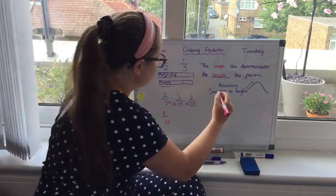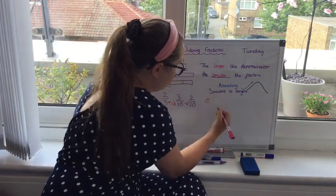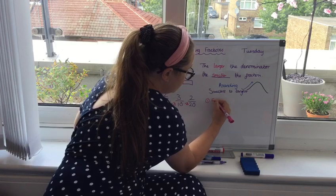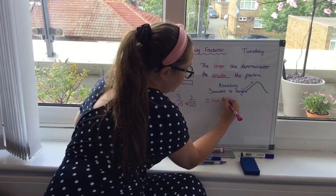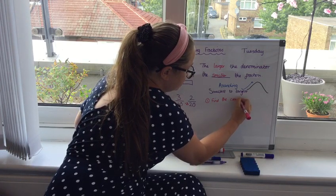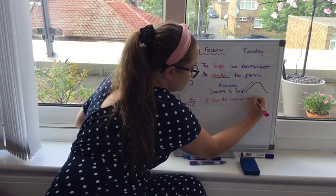OK, so let's do that. Let's write that down in the steps. So the first thing you do is you find the common multiple.